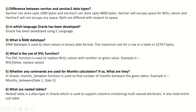Next question: in which language has Oracle been developed? Oracle has been developed using C language. What is the RAW data type? RAW data type is used to store values in binary data format. The maximum size for a RAW in a table is 32767 bytes.